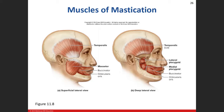Here you can see the muscles of mastication — temporalis is a relatively deep muscle, and there's masseter. Dissecting those away, deeper in, the lateral and medial pterygoids attach onto the lateral and medial pterygoid plates, which are part of the pterygoid process on the sphenoid bone.